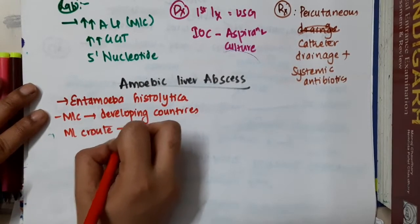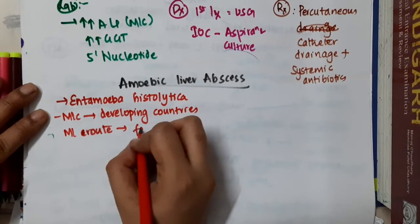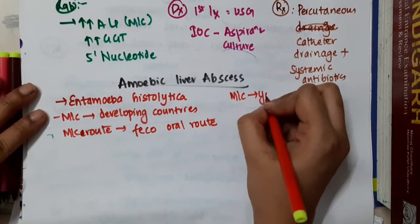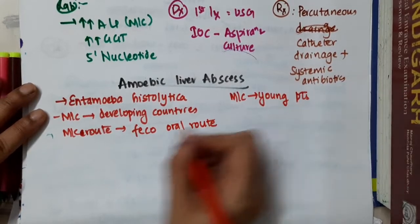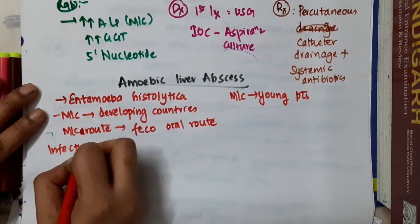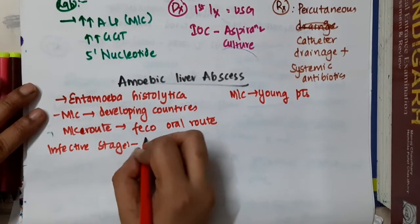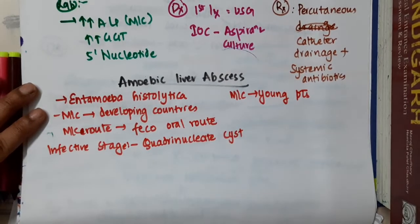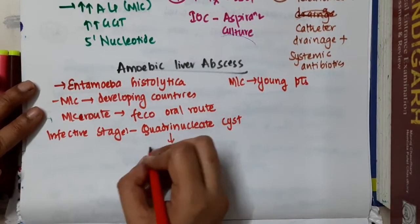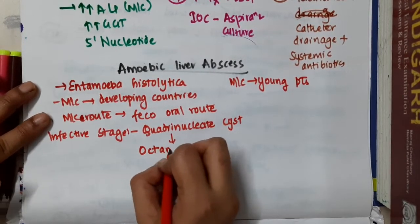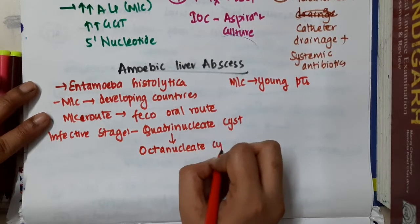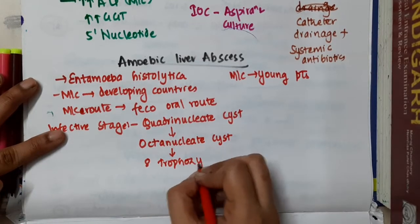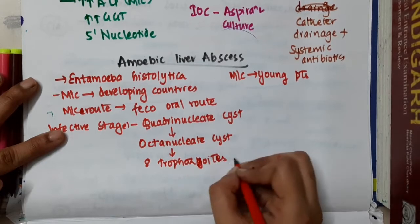The most common route is the feco-oral route, and it is most common in young patients. The infective stage of amoebic liver abscess involves the presence of a quadrinucleate cyst, followed by an octanucleate cyst, which gives rise to 8 trophozoites that are released.